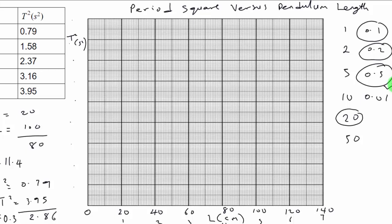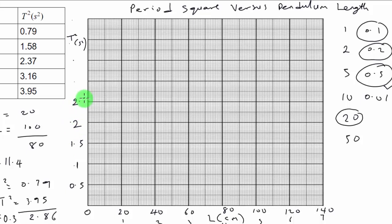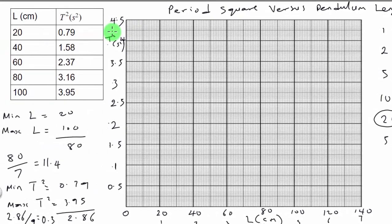Now let's label the y-axis with a scale of 0.5. Starting from 0: 0, 0.5, 1, 1.5, 2, 2.5, 3, 3.5, 4, 4.5. So now we are done with the scale.